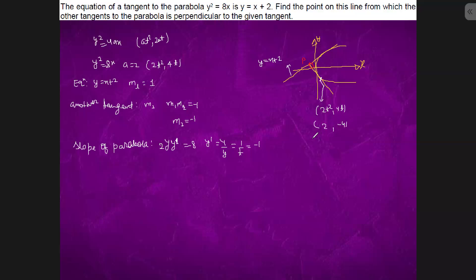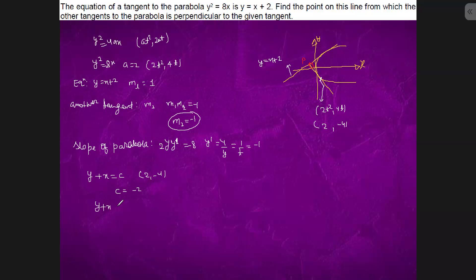This point will come out to be 2. The slope of the other tangent is −1. We got the point (2, −4). So the equation is y + x = c, passing through (2, −4). So c = −2. We have the equation y + x = −2. This is one equation of the line.